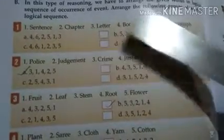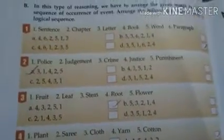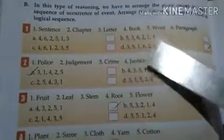How? First, you write letters like A, B, C, D to form a word. After arranging those words, they become a sentence. These sentences will make a paragraph, and paragraphs make a chapter, and then a book is written. So the answer is 3, 5, 1, 6, 2, 4 — that is, letter, word, sentence, paragraph, chapter, and then book.